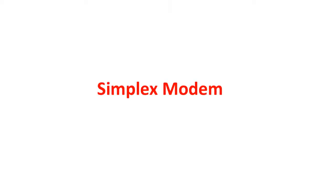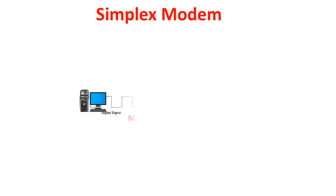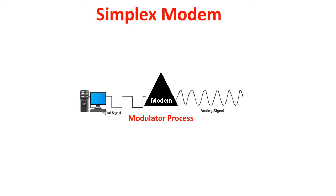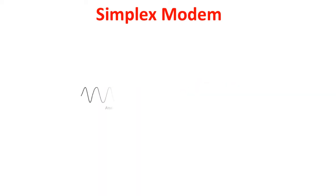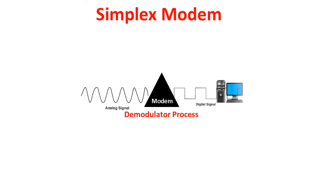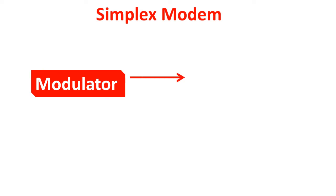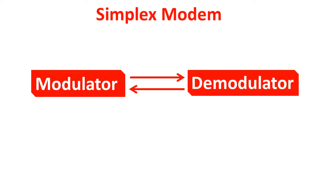A simplex modem can transfer data in only one direction — either from a digital device to a network setup using the modulator process, converting digital data into analog signal, or from the network setup to the digital device using the demodulator mechanism, converting analog signal to digital data. Therefore, the simplex modem cannot work with both modulator and demodulator, and does not support two-way conversations.